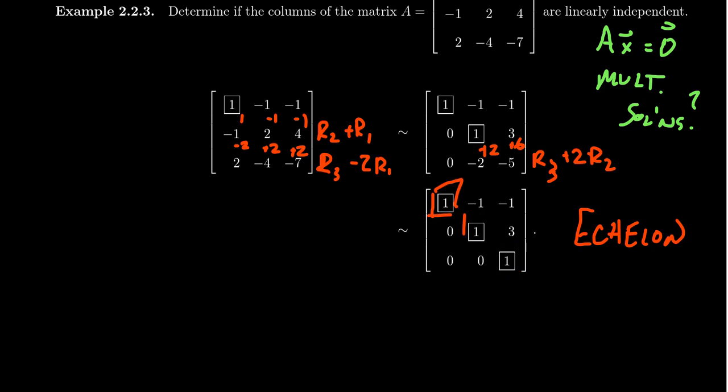So because there's no free variables, that means that there won't be multiple solutions to this equation AX equals 0. And because there's not multiple solutions, that tells us that our set of vectors is in fact linearly independent. So the column vectors are linearly independent.